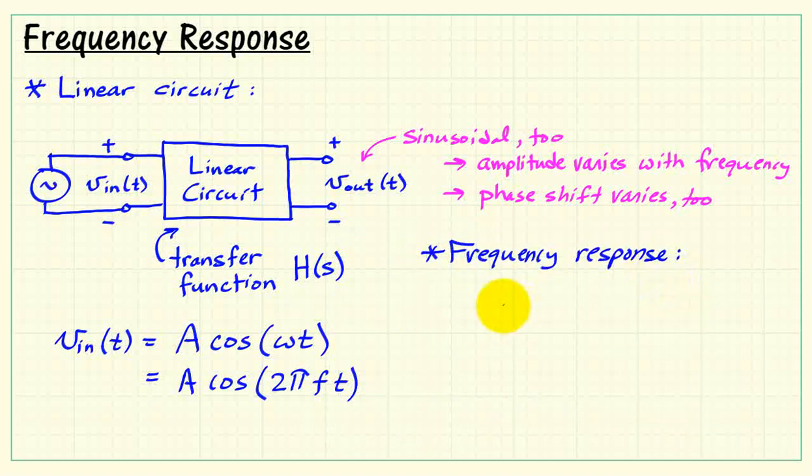So when we use the term frequency response, what we really are getting at here is the transfer function H of S evaluated at S equals j times omega. So again omega could also be expressed as 2π times f. So if we evaluate S at j 2π times f, we're basically stating the same thing.